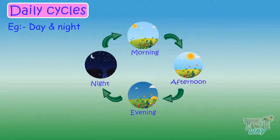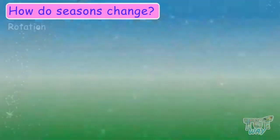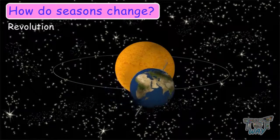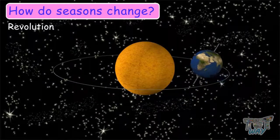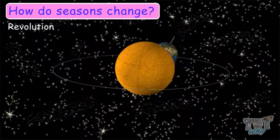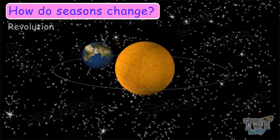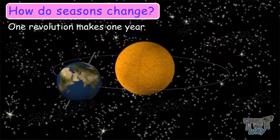Now let's see some more cycles — seasons. While the Earth is rotating around its own axis, it is also revolving around the sun, and it takes 365 days to make one complete trip around the sun, which we call one revolution, and it's called one year.